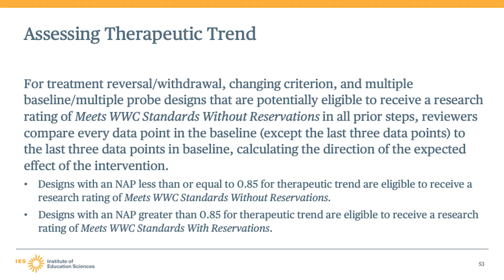This coding would be reversed if decreased values in the outcome represent an improvement. Findings from designs with a non-overlap of all pairs less than or equal to 0.85 for therapeutic trend are eligible to receive a rating of meets WWC standards without reservations. Findings with a non-overlap of all pairs greater than 0.85 for therapeutic trend are eligible to receive a rating of meets WWC standards with reservations. Any baseline phase with zero within-phase variance can be assumed to have met this requirement without needing to calculate the non-overlap of all pairs.